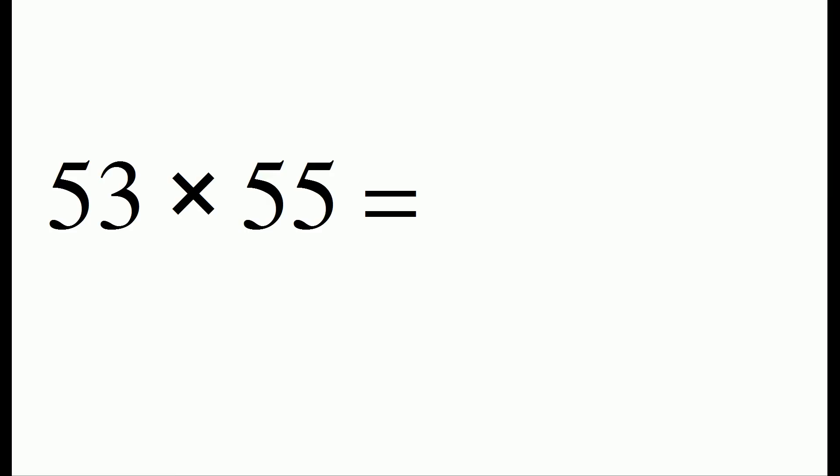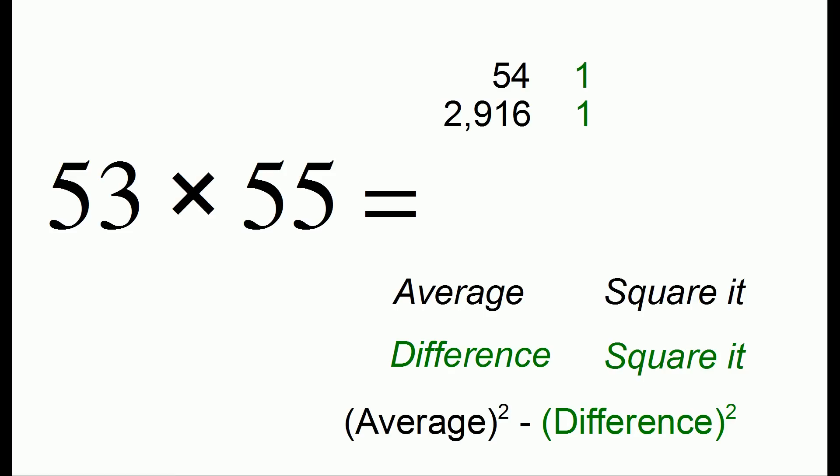Let's do another problem. Let's do 53 times 55. The average is 54, which we then need to square. This will be tricky. Most of you don't know how to do this. I actually explained a trick in a previous video of how to square numbers in the 50s. So combining that trick, we'll go ahead and use it. The square of 54 is 2,916. The difference from 54 is 1. Squared is also 1. And taking the difference of the squares gives us the answer of 2,915.